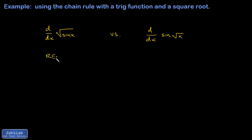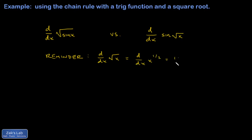Before I start, we'll just do a quick reminder of how do you differentiate a square root function. So if I wanted the derivative with respect to x of square root of x, I just think of it as a power of x — that's x to the 1 half — and then I use the power rule, and I get 1 half x to the negative 1 half, which is 1 over x to the 1 half, or 1 over the square root, so it simplifies to 1 over 2 root x. You deal with roots by thinking of them as exponents.